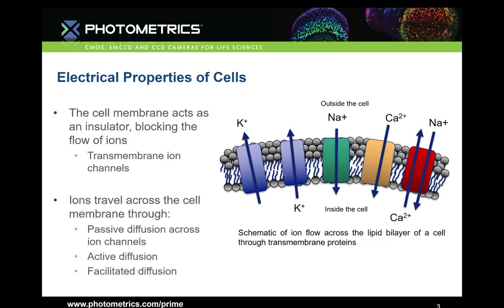Transmembrane proteins allow ions to cross the extracellular matrix and back in. This happens in various ways. Passive diffusion requires no additional energy input from the cell; ions will cross the membrane individually through openings or pores in the proteins. Active diffusion involves the same process but requires some energy input from the cell. Facilitated diffusion relies on a ligand binding to that protein to enable the ions to cross.